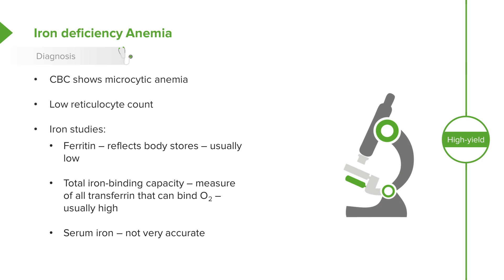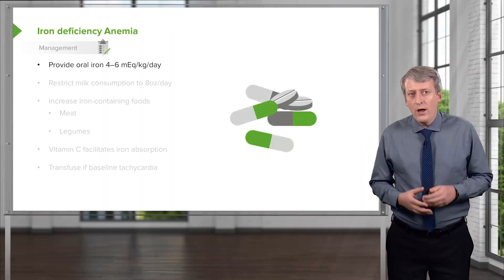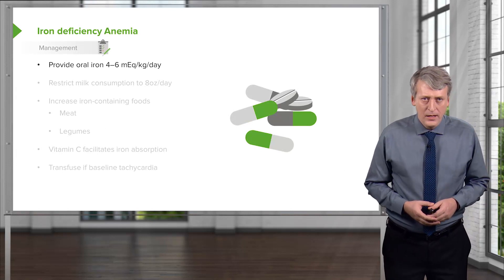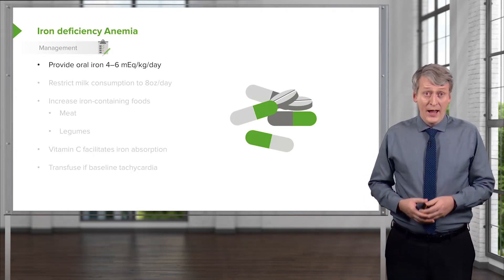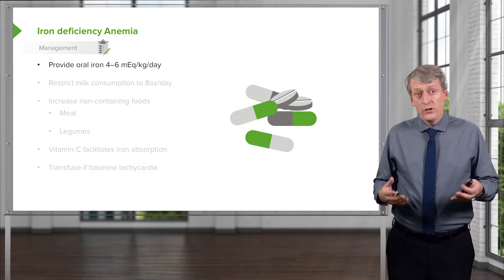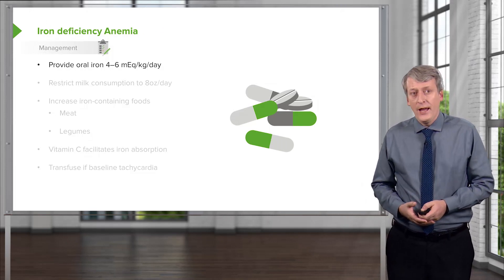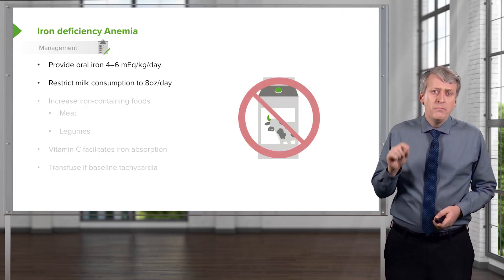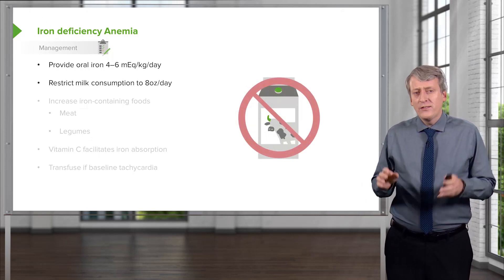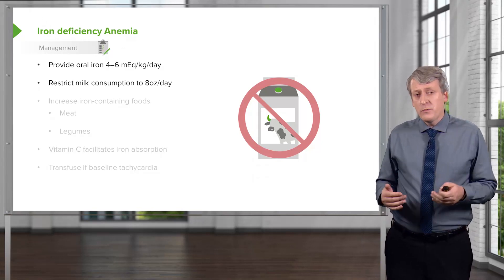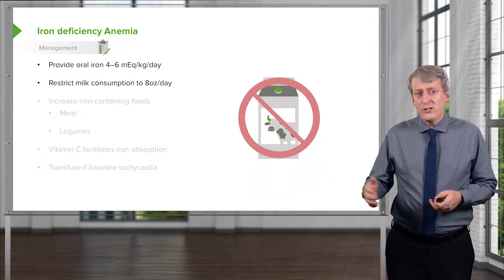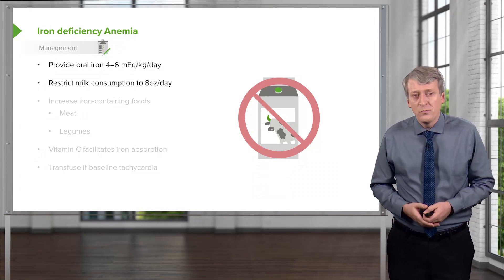The serum iron is not a particularly useful test; it comes along with the panel but I don't use it very often. For management of iron deficiency anemia, we give iron supplementation at a dose of around 4 to 6 milliequivalents per kilogram per day. We also restrict milk consumption, since that's such a common cause, though sometimes you have to spend time helping families learn to limit their child's milk intake.